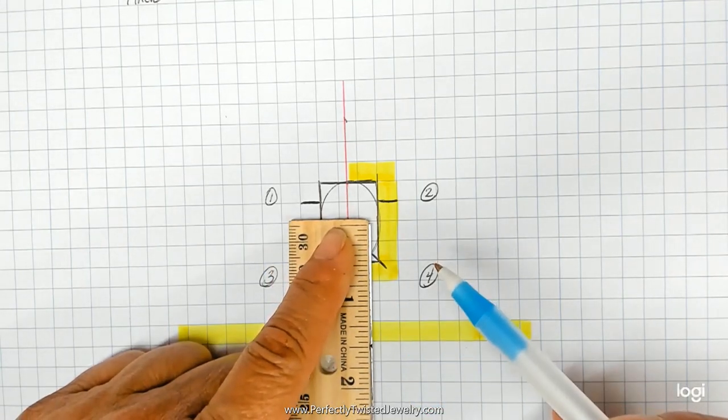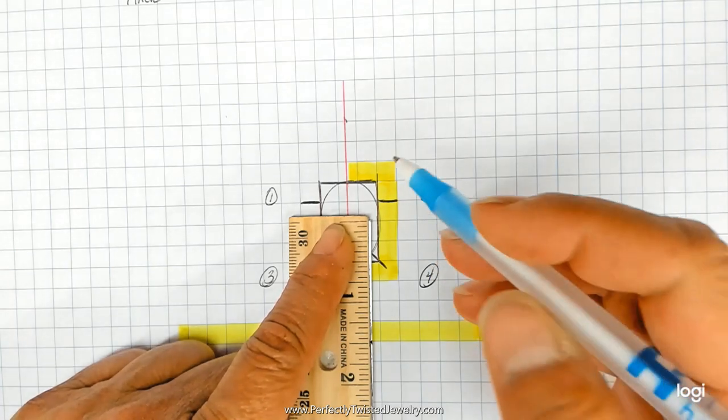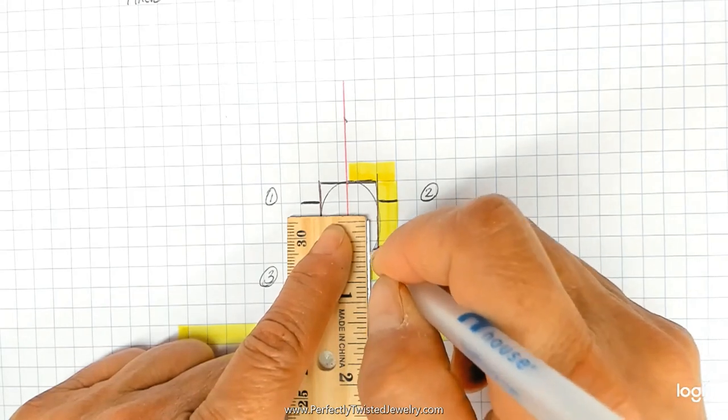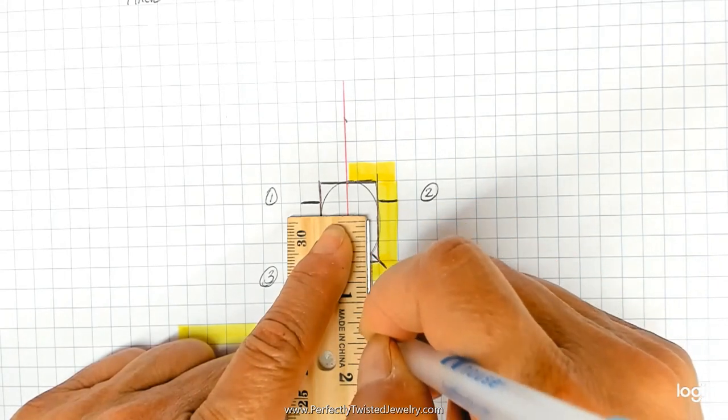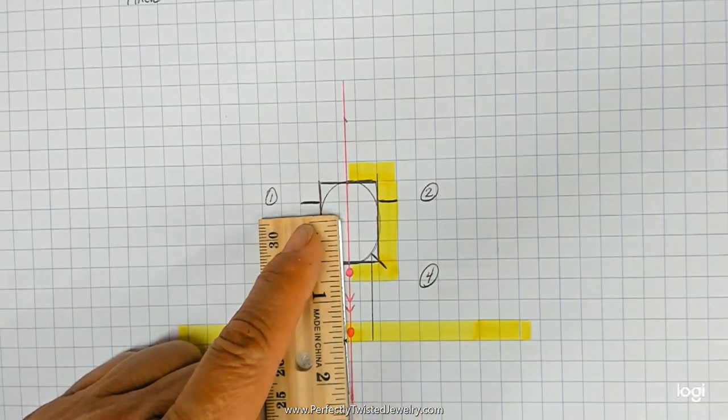And again, it doesn't have to be exact because ultimately I'm going to check it when I physically make this piece. I'm going to count these wraps, but this will at least give me an idea of where I'm going on the map.